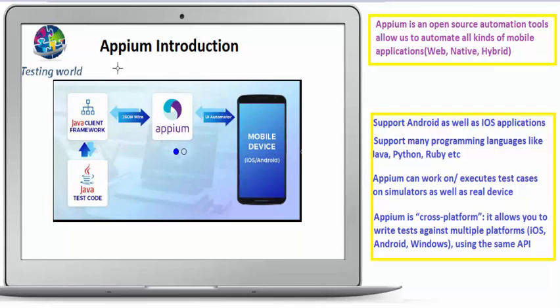Mobile applications are the applications which are running on mobile devices. It could be an Android device, it could be an iOS device, it could be a Windows device. When we are working on mobile application testing and want to automate that process, there are multiple tools available in the market.